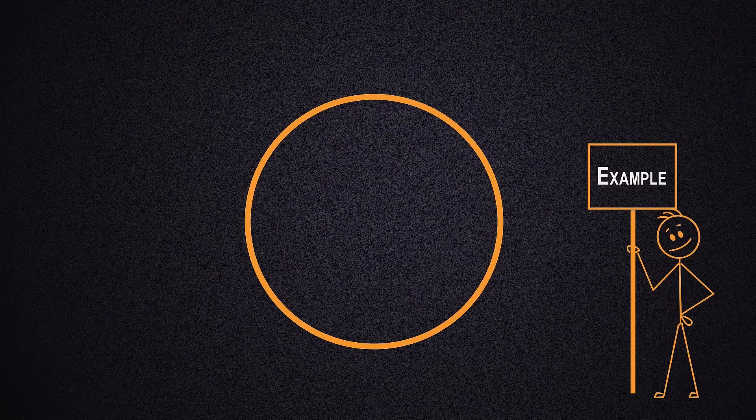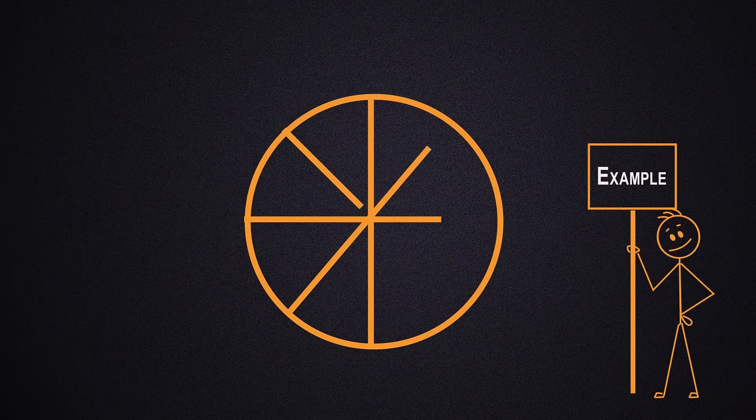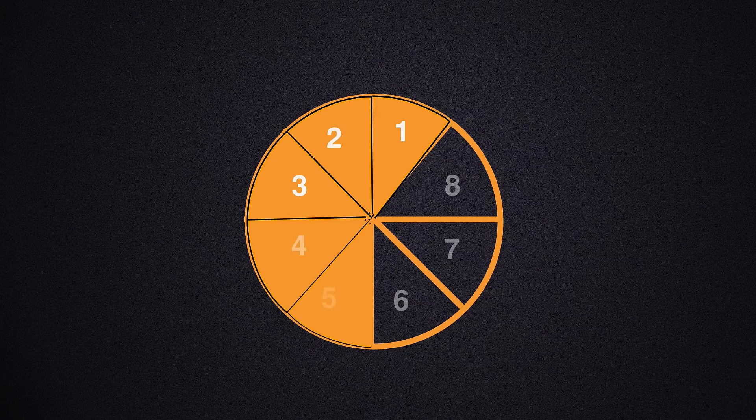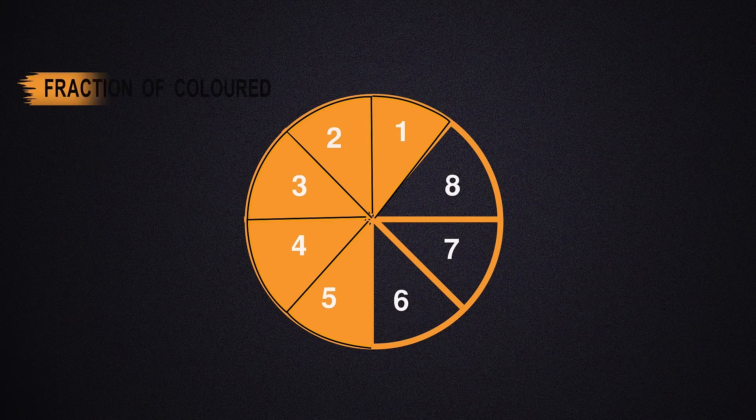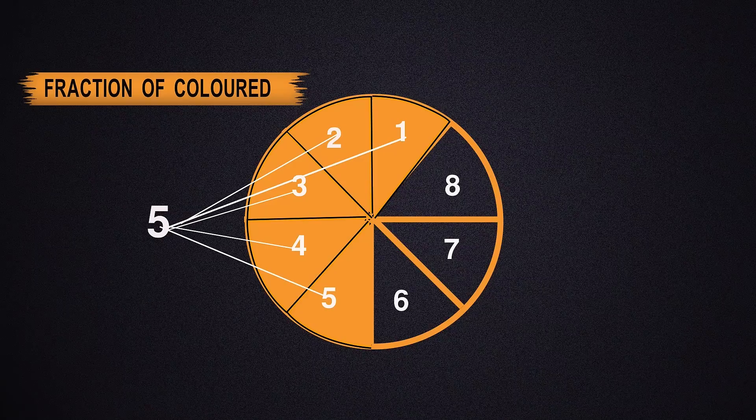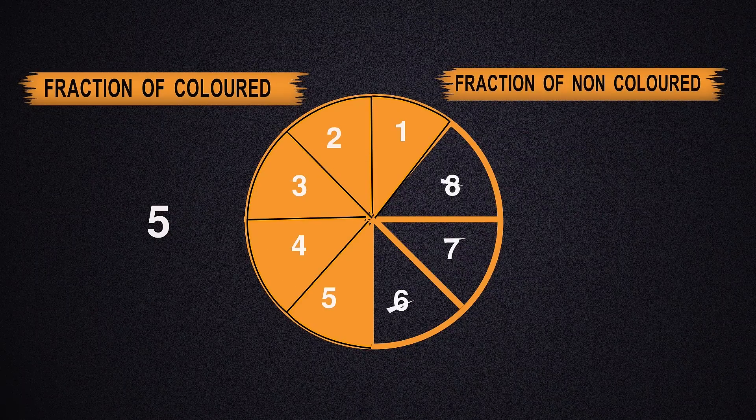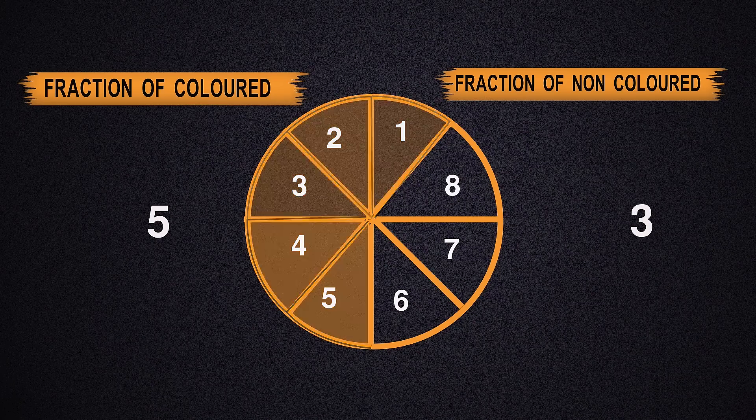Let's look at the fraction of colored and non-colored shapes. Here, the circle is divided into eight parts. Five parts of the circle are colored and three are non-colored. To express the fraction of colored parts, we can use five-eighths and to express a fraction of non-colored is three-eighths.